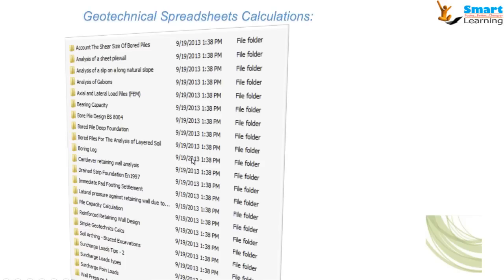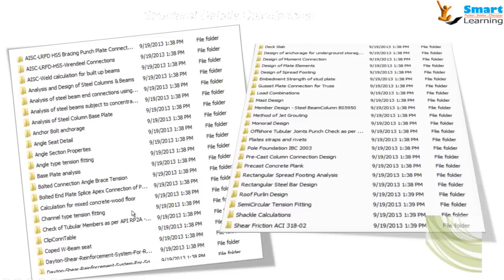In the geotechnical spreadsheet section, you can see bearing capacity, axial and lateral load piles, analysis of gabions, analysis of sheet pile wall, pile capacity calculations and wall pressure analysis — all included within this collection.